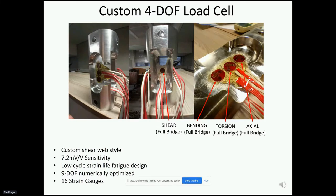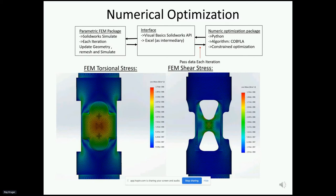To measure applied loads, I developed a custom four-degree-of-freedom load cell that can measure shear, bending, torsion, and axial forces, all with full Wheatstone bridges. A custom load cell was developed because no commercial solution matched our loads — and commercial ones are exorbitantly expensive. It achieves 7.2 mV/V sensitivity, which is three times more sensitive than commercial load cells. The geometry was modeled using finite elements, optimized for maximum sensitivity with a coupled parametric FEA model in SolidWorks and a numerical optimization in Python, with nine geometric input parameters and 20 constraints.